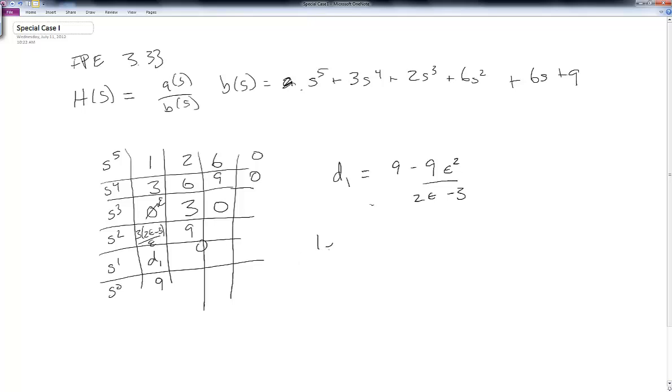And now what I do is I let epsilon go to 0, and I look for sign changes. Notice in this term, as epsilon goes to 0, I can just take the limit of 3 times 2 epsilon minus 3 over epsilon, as epsilon goes to 0.